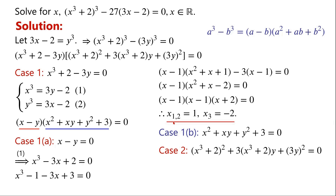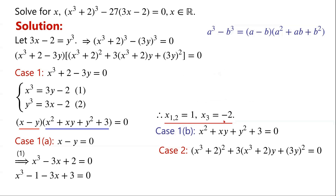We can factorize x squared plus x minus 2 and write (x minus 1) times (x plus 2). So x₁ equals 1 and x₂ equals minus 2.